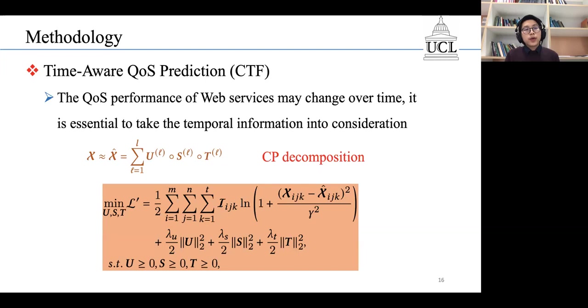Considering that the QoS performance may change over time, it is essential to take the temporal information into consideration. In this case, we use a three-dimensional tensor to represent the QoS observations.